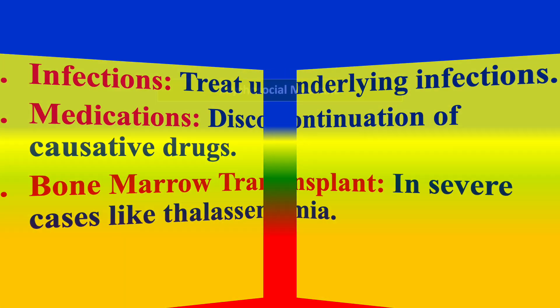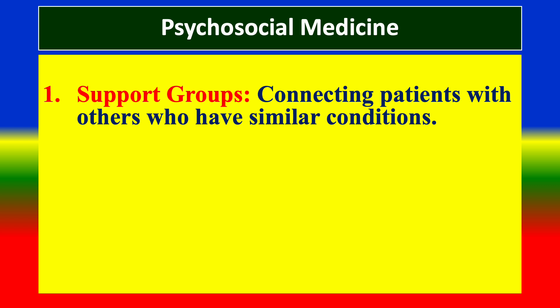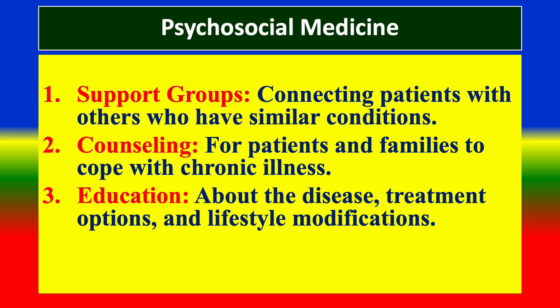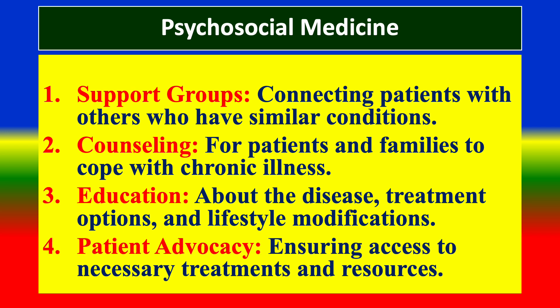Psychosocial support includes support groups, connecting patients with others who have similar conditions, and counseling for patients and families to cope with chronic illness. Patient education covers the disease, treatment options, and lifestyle modifications. Patient advocacy ensures access to necessary treatments and resources.